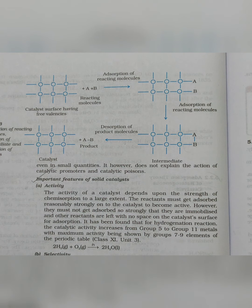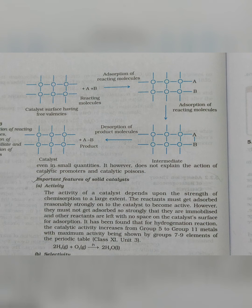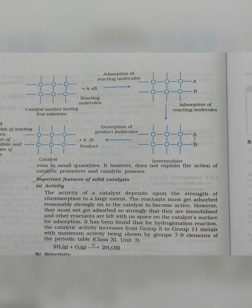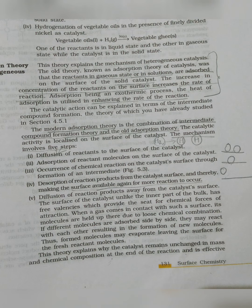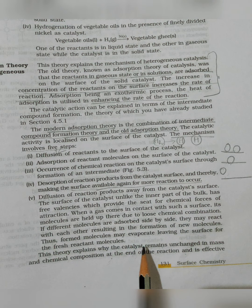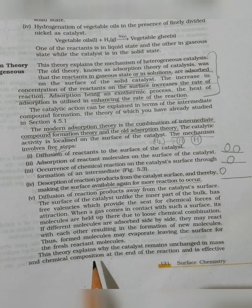We observe that everything that happened, happened to the reacting molecules — they got diffused, they joined, they became the product. Nothing has happened to the surface of the catalyst. This very process tells us why catalysts are not consumed in the reaction — they just help in the reaction but are not consumed. If you check page 131, last line, it is clearly written: this theory explains why the catalyst remains unchanged in mass and chemical composition at the end of the reaction.